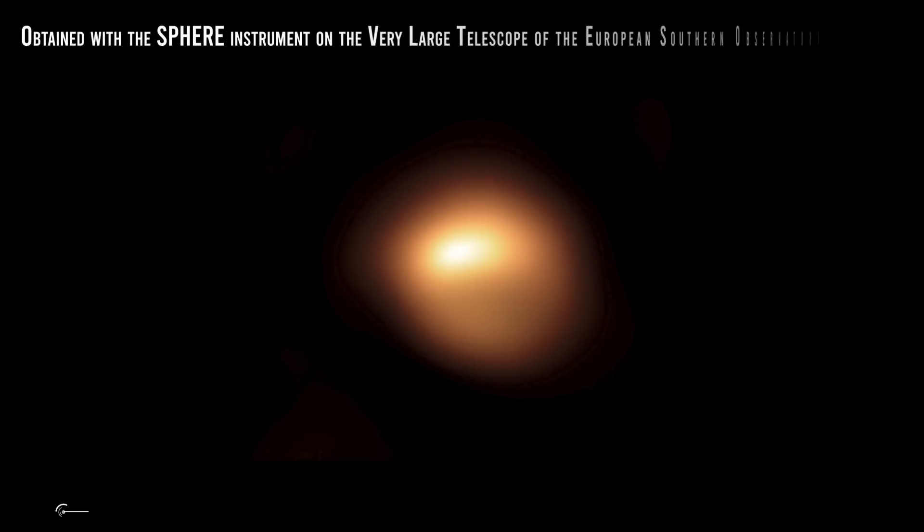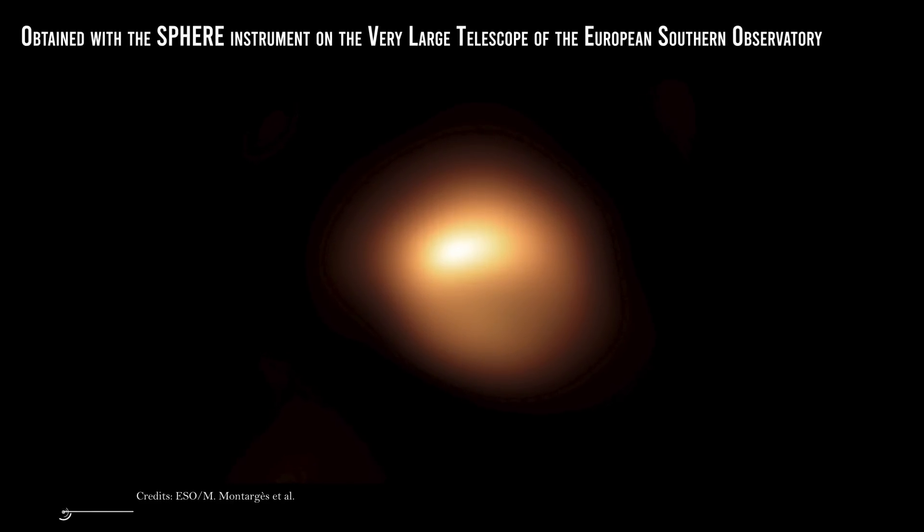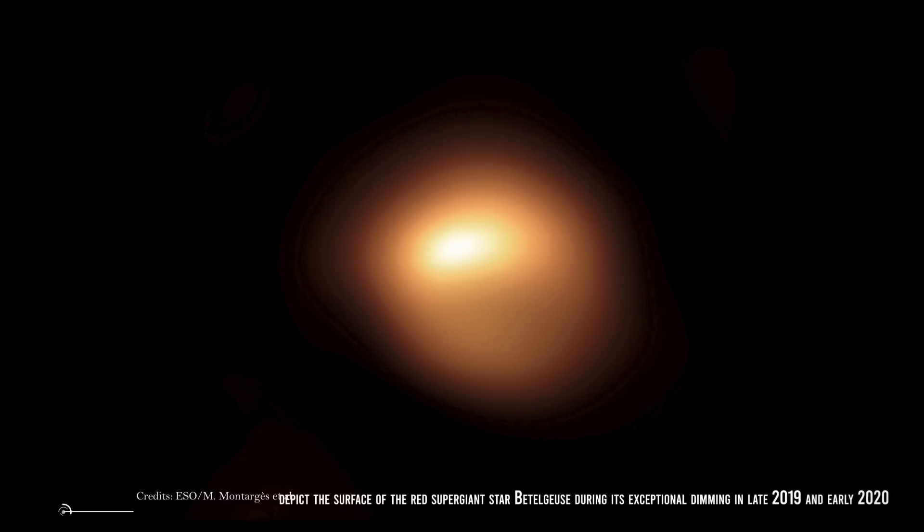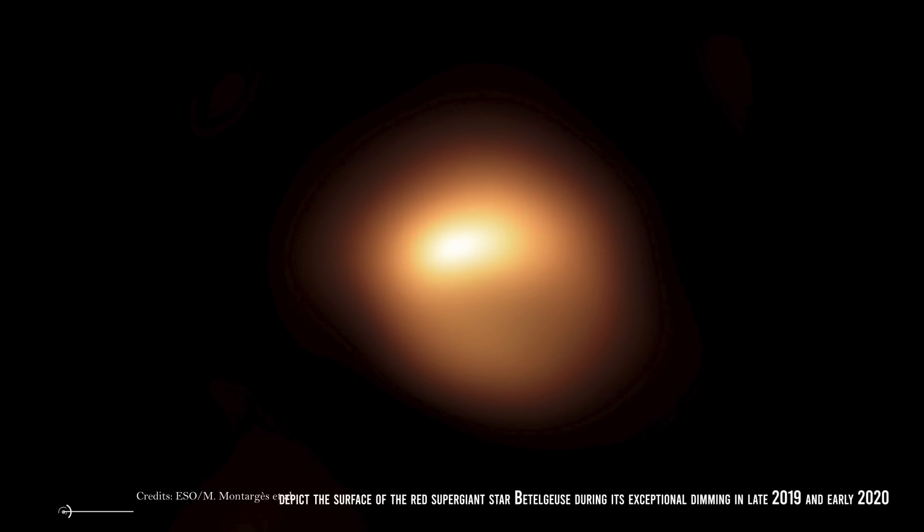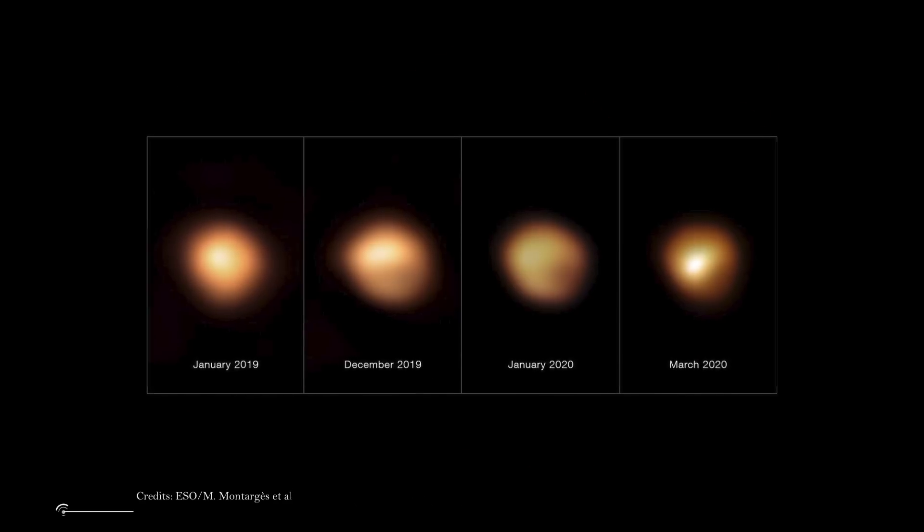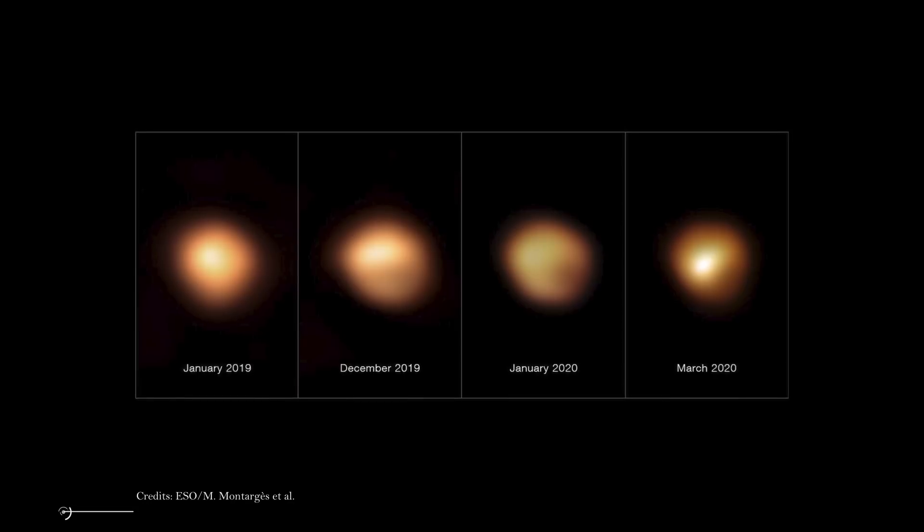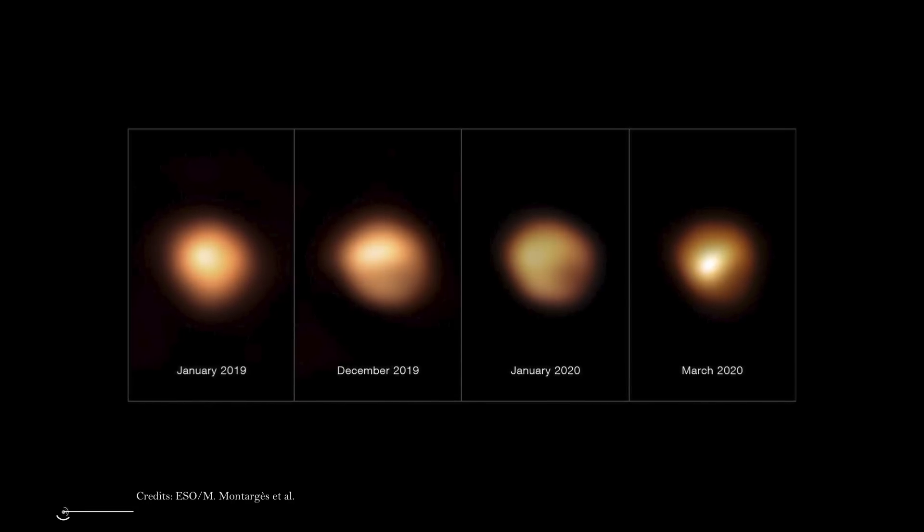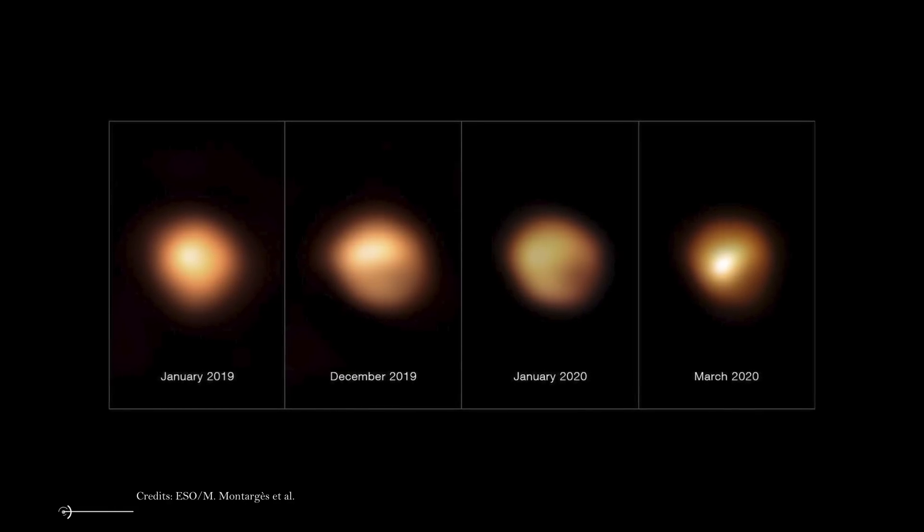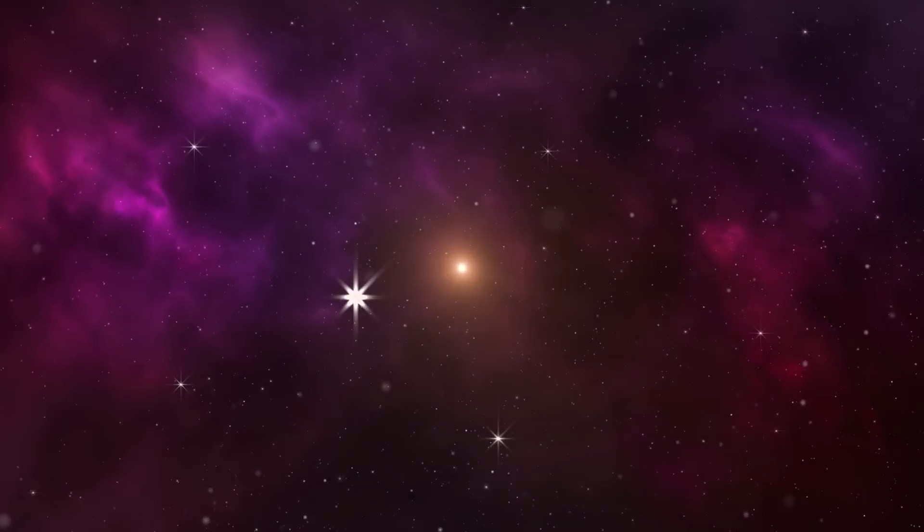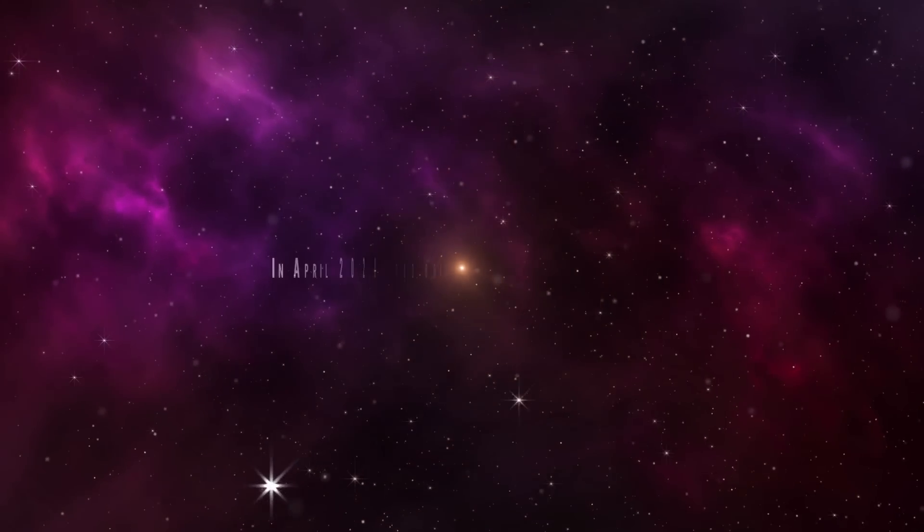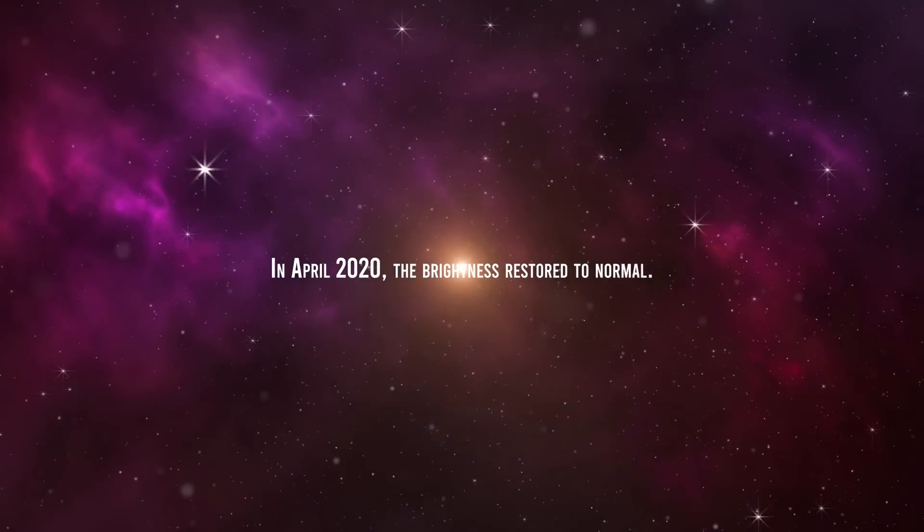These photos, obtained with the SPHERE instrument on the Very Large Telescope of the European Southern Observatory, depict the surface of the red supergiant Betelgeuse during its exceptional dimming in late 2019 and early 2020. The picture on the far left was obtained in January of 2019 and shows the star at its typical brightness, but the subsequent photographs were taken in December of 2019, January 2020, and March of 2020, when the star's brightness had declined significantly, particularly in its southern quadrant. In April of 2020, the brightness restored to normal.